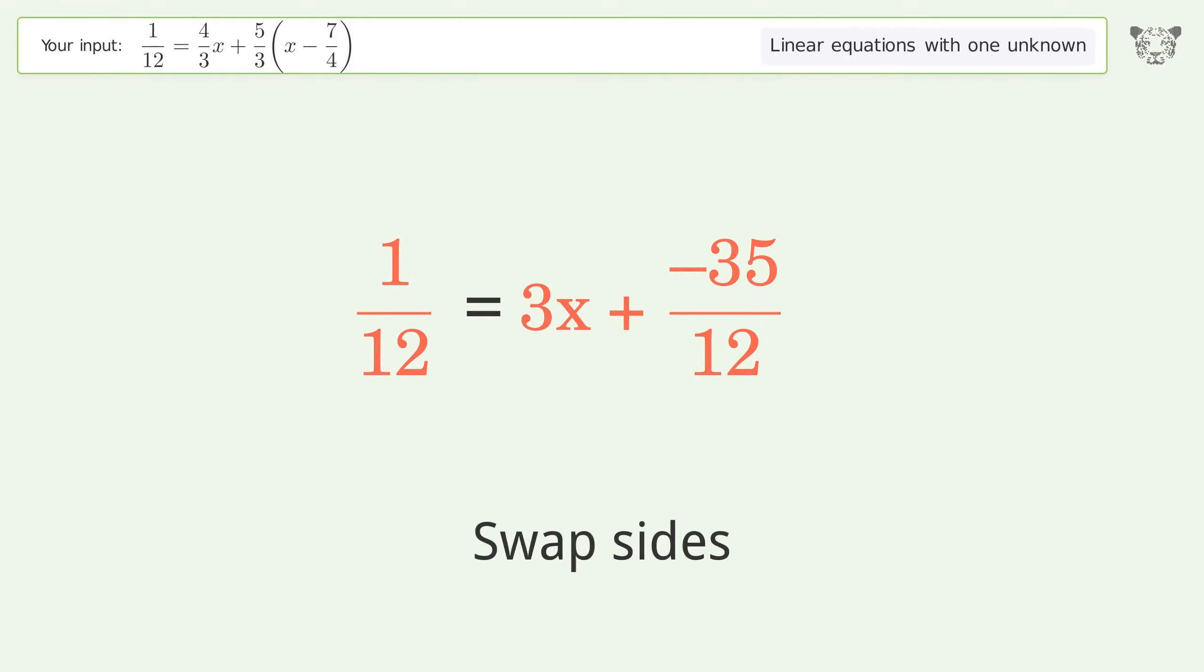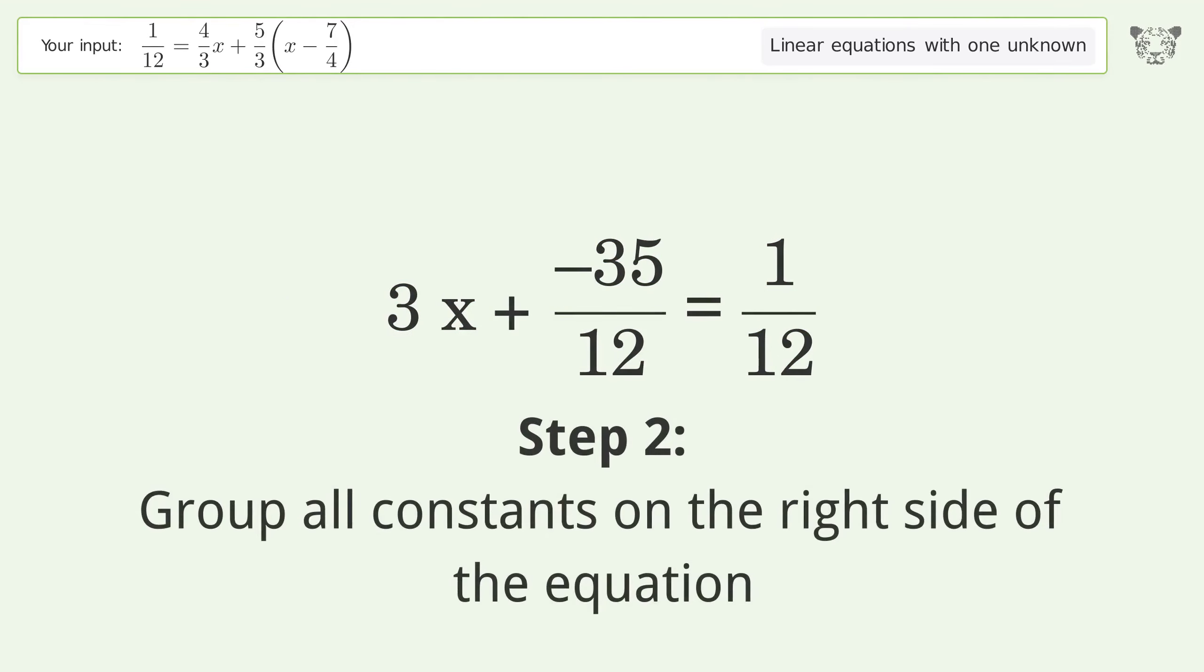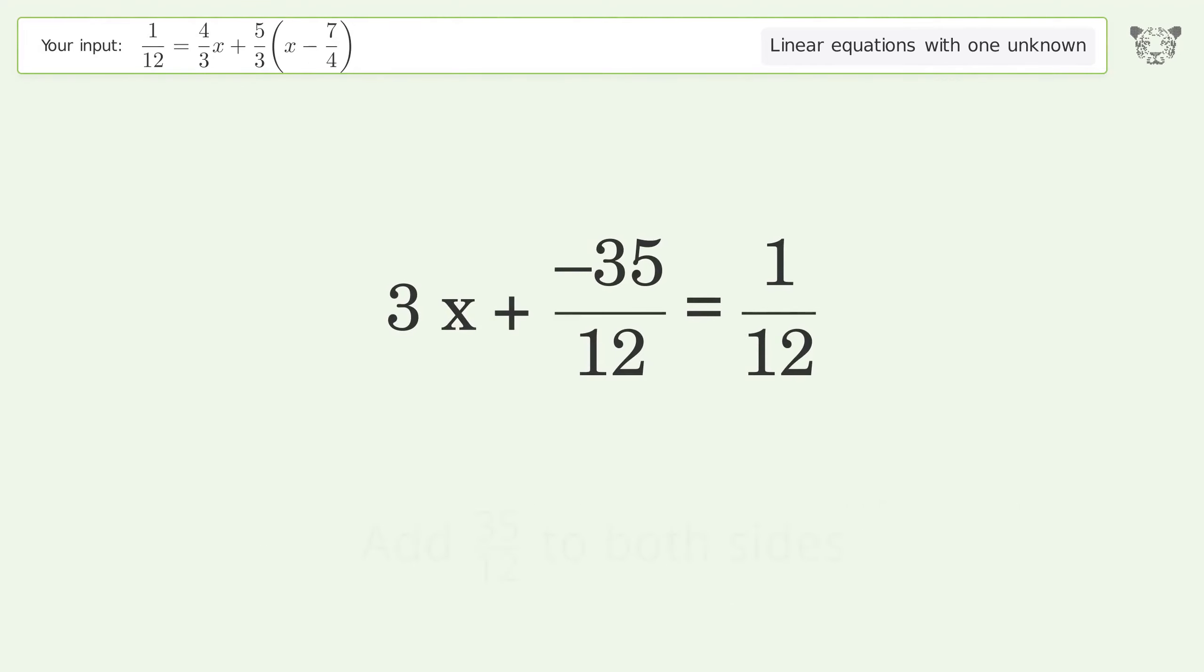Swap sides. Group all constants on the right side of the equation. Add 35 over 12 to both sides.